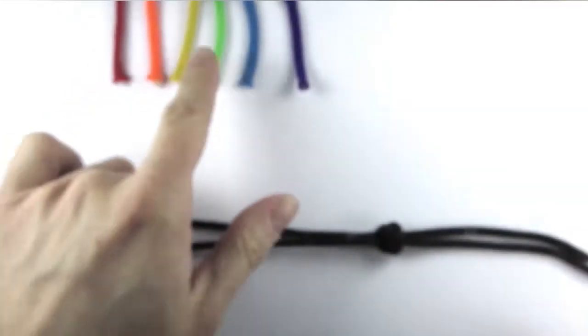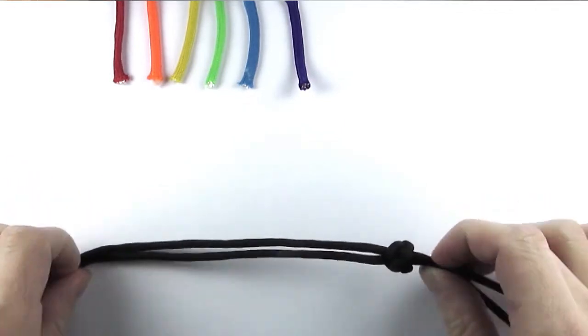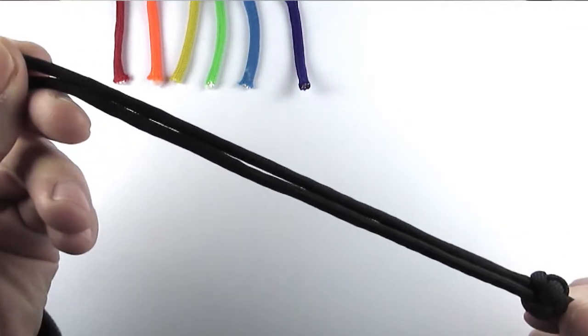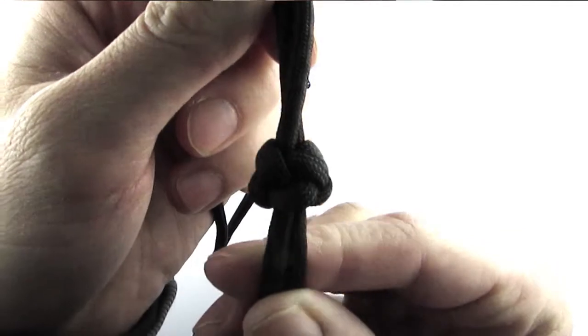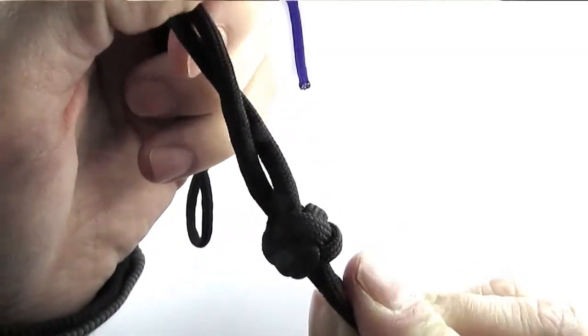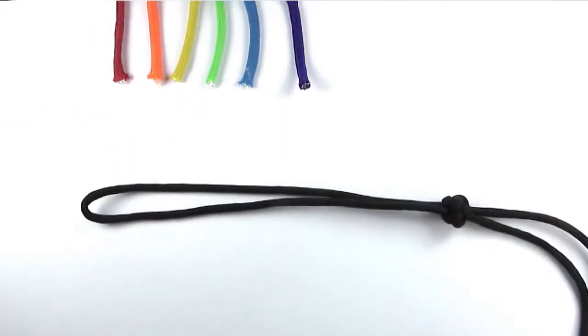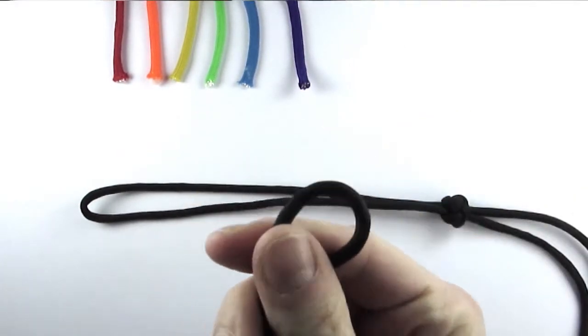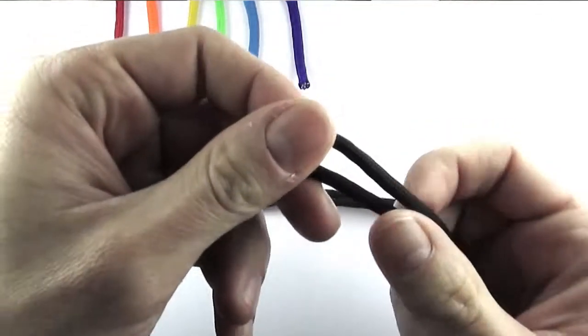So I've prepared a few pieces of paracord of different colors as well as a core onto which I've tied the lanyard knot. I also have a larger piece of cord that I'm going to use to tie the cobra knots onto the core.